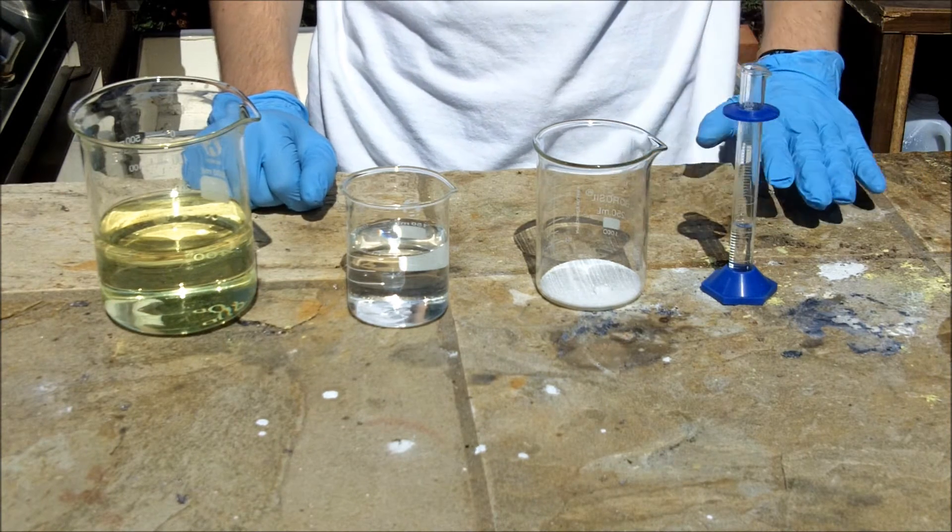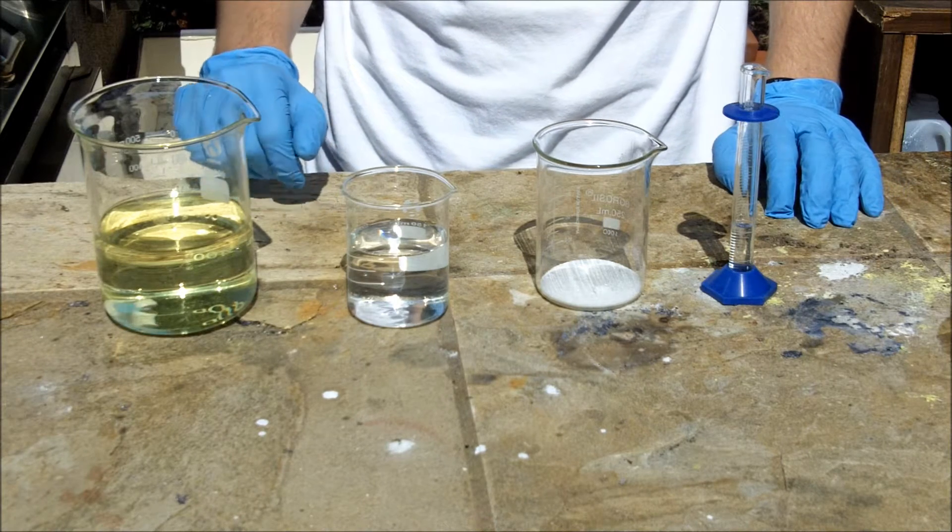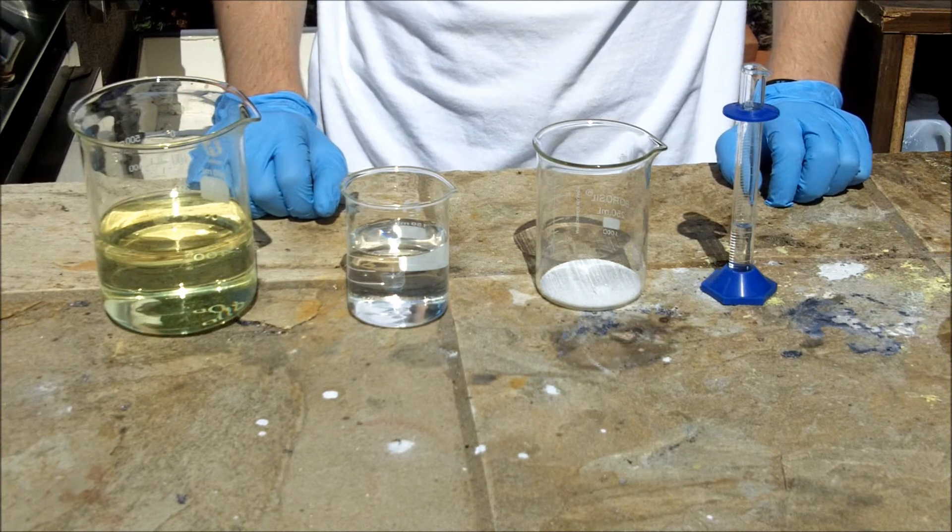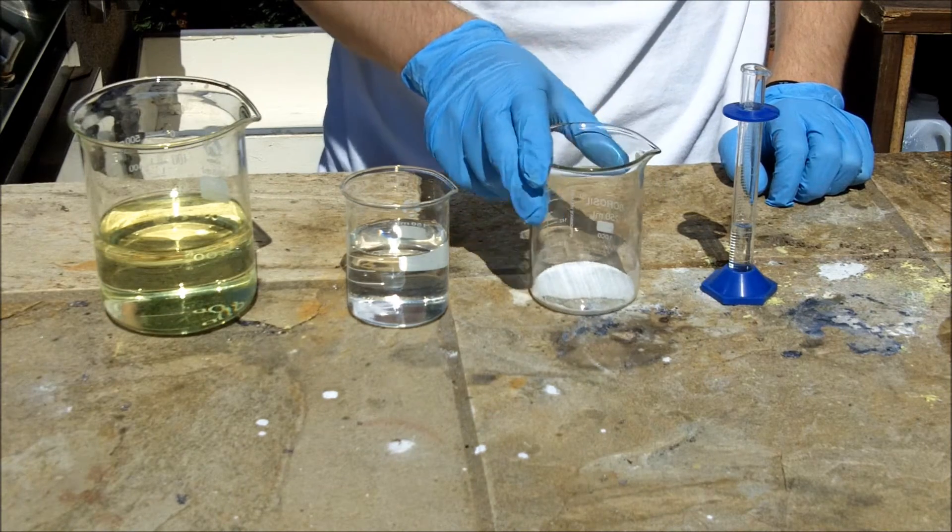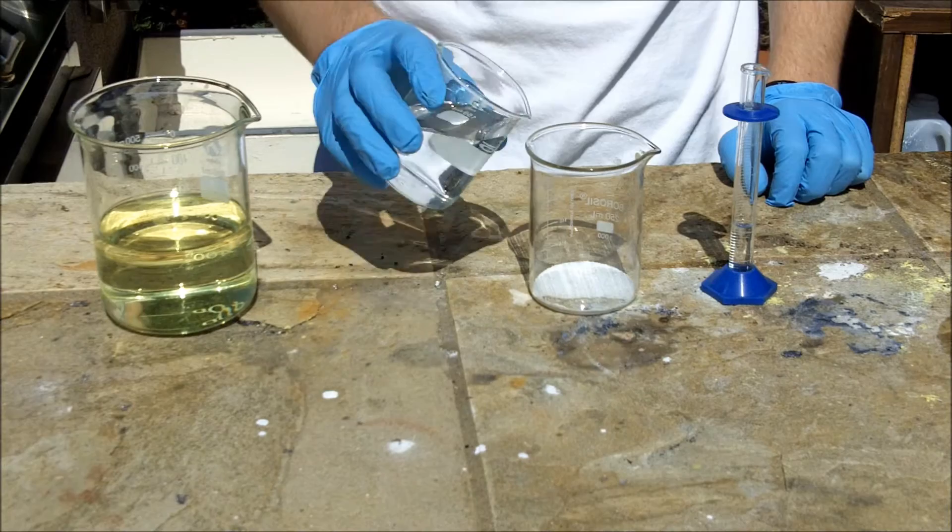So I am not going to be making fluoroform though because I don't have any fluoride salts. Anyway, so to get started, take 7.4 grams of sodium bromide and dissolve that in 100 milliliters of water.